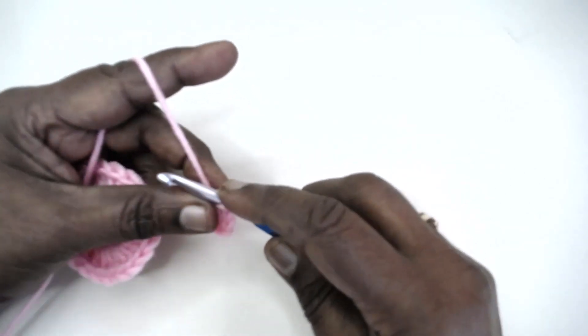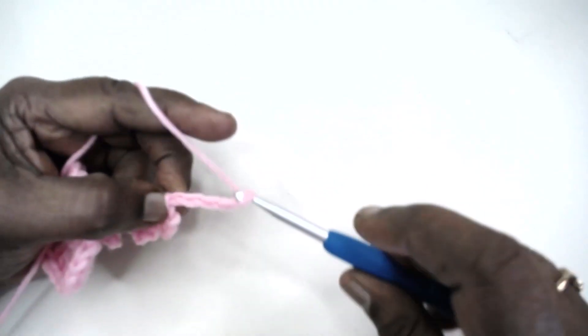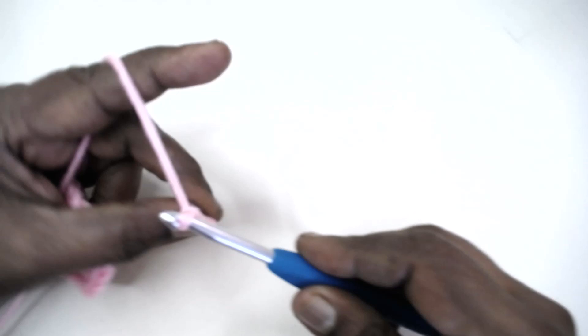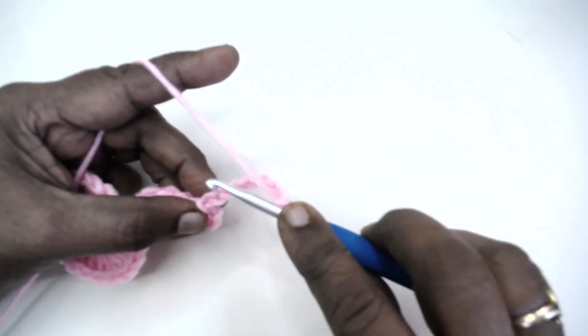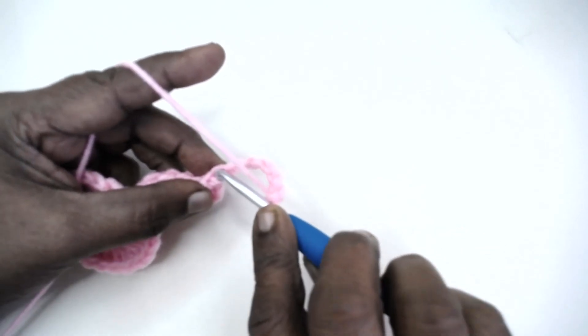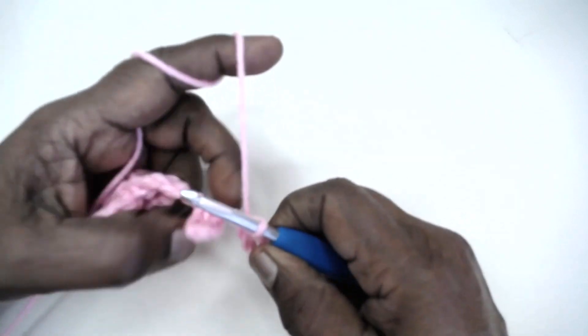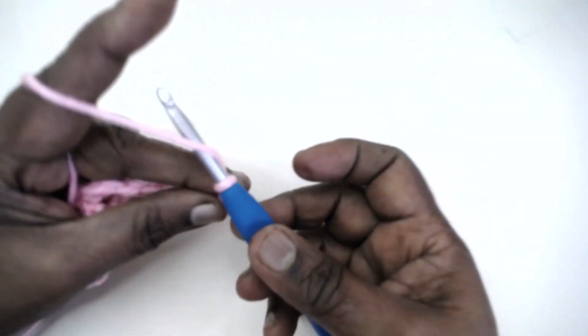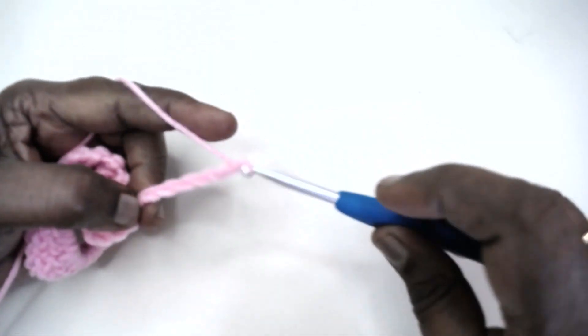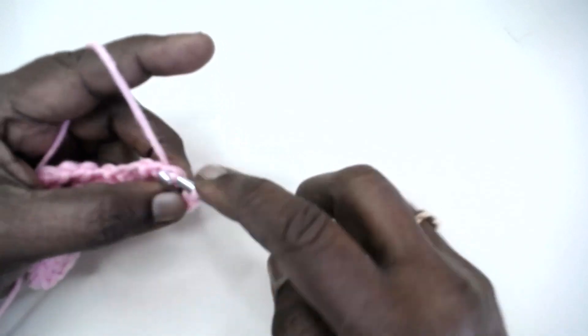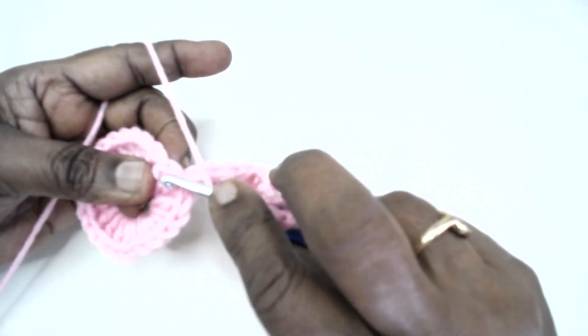First petal of the trefoil is made up of chain 9. Slip stitch to the first stitch here. Chain 7 again, slip stitch to the first chain. Now make two trebles in the next double crochet.